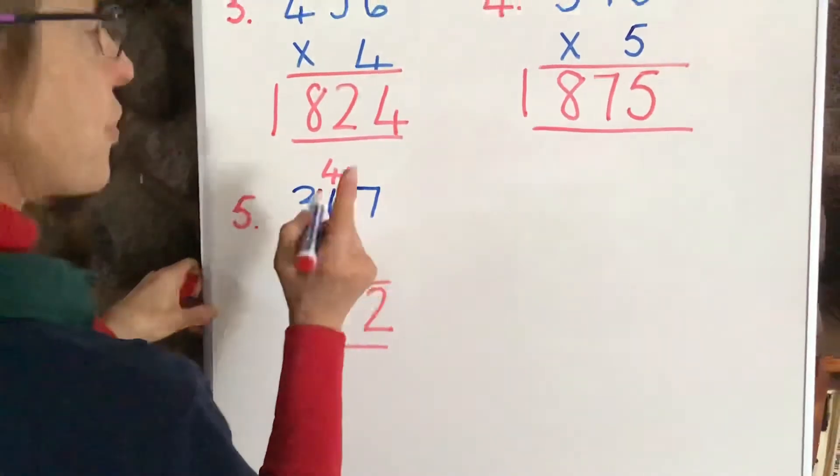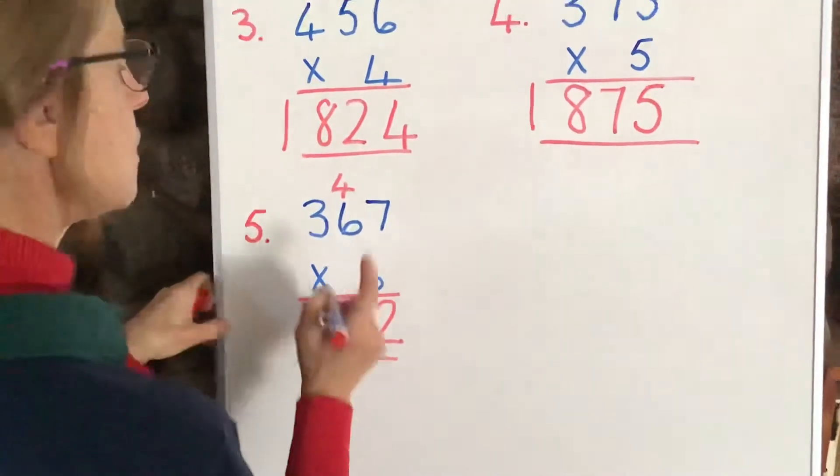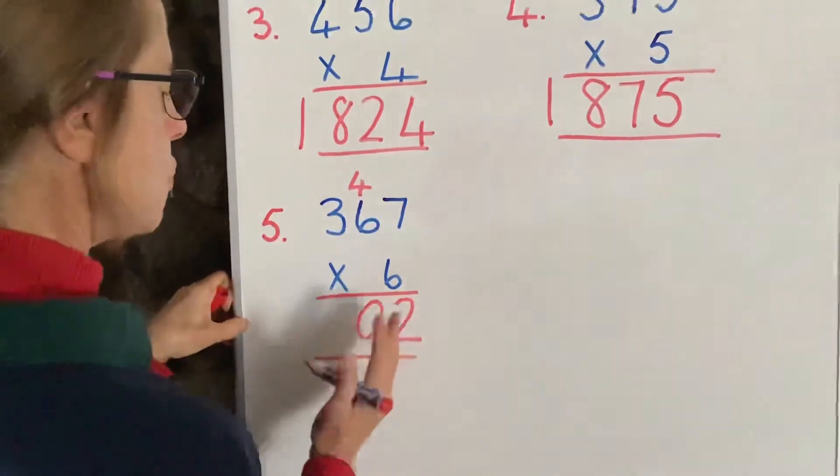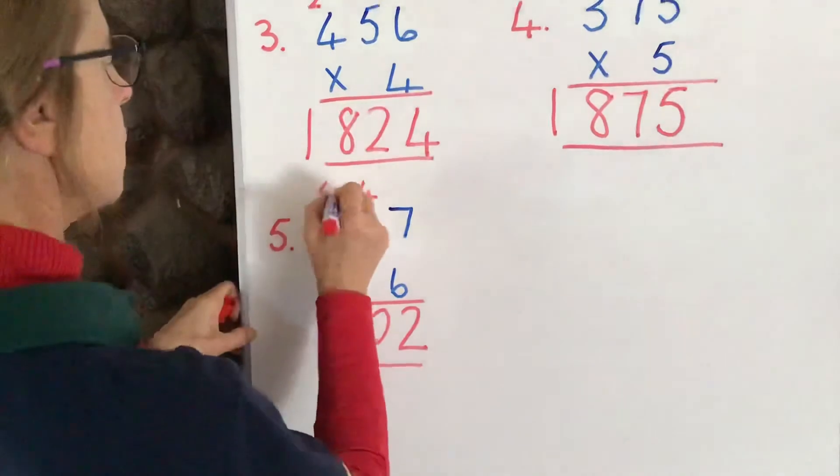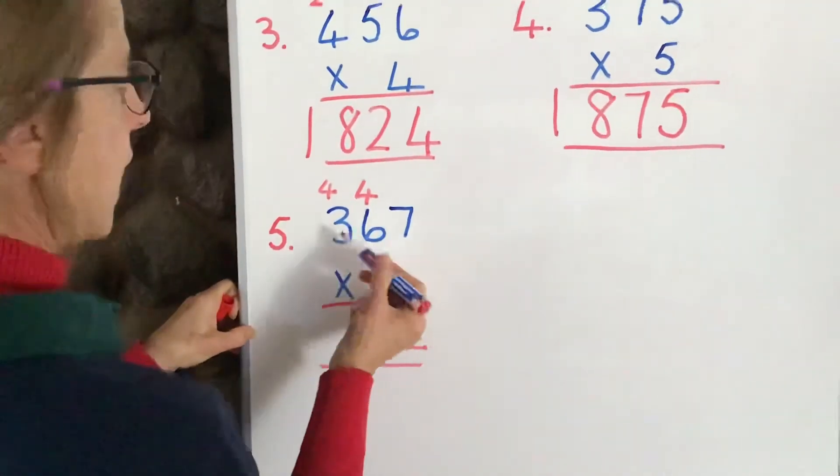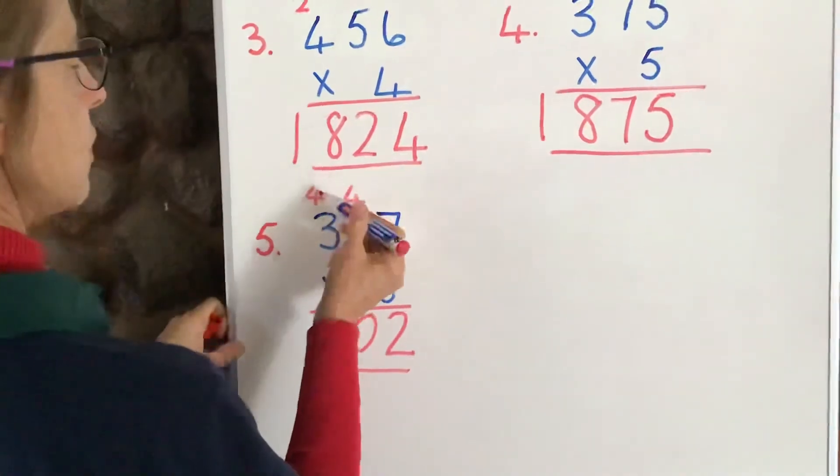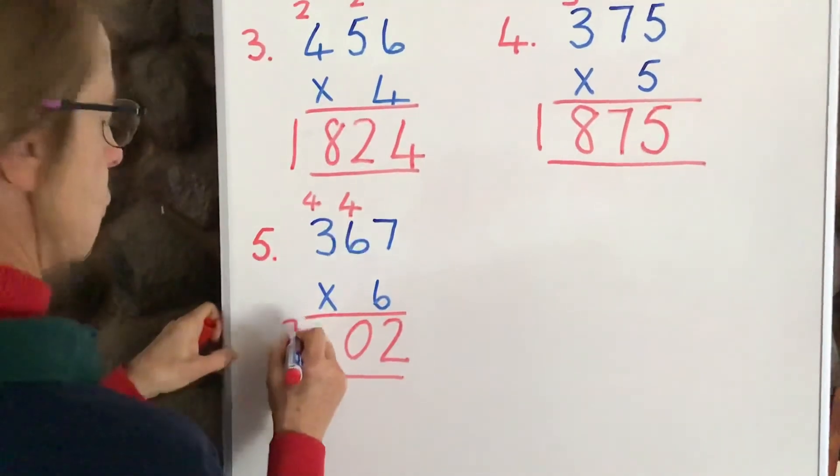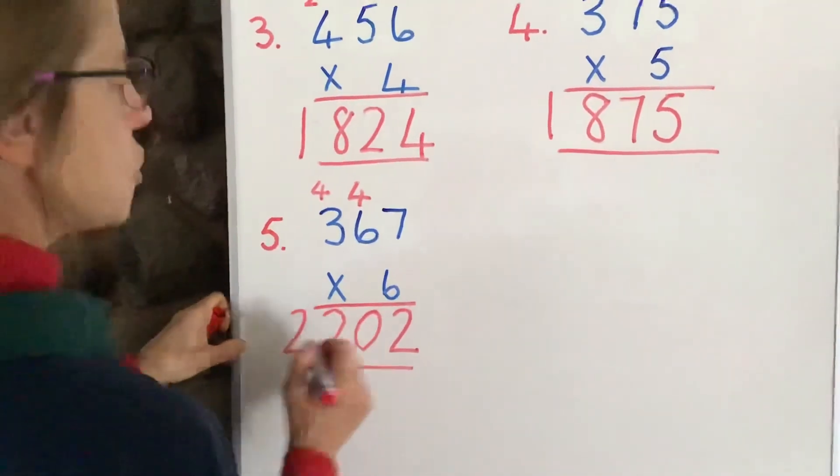Right, 6 times 6 is 36, plus 4 is 40. Put down your 0, which is the unit of 40, and put the 4 at the top there. And we say 6 times 3 is 18. Then we pass on the 4, and it's 22. So, we have 2,202.